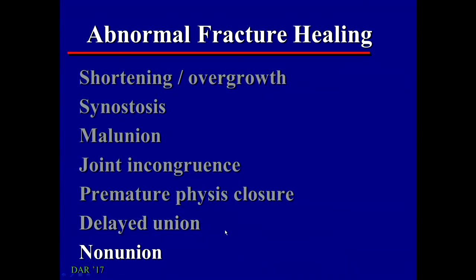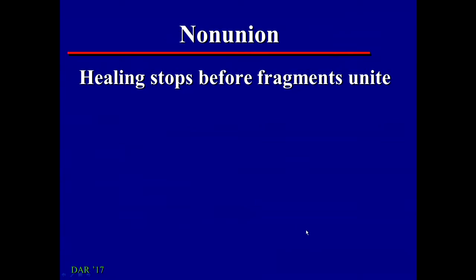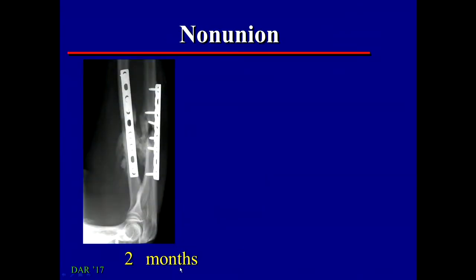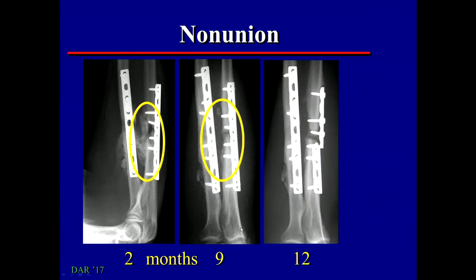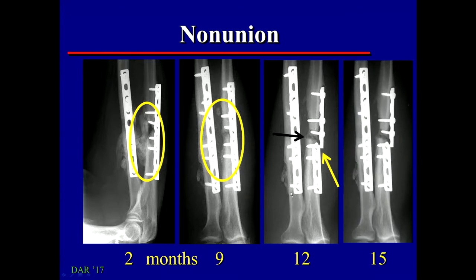Non-union is the granddaddy of abnormal fracture healing — it occurs when healing has stopped before the fractures unite. Here we have a fracture of the radius and ulna at two months, internally fixated, with a lot of callus formation but still a gap. At nine months, still a gap. At 12 months, the fracture gap has actually gotten bigger, and the fixation has itself fractured — which guarantees the bone did not heal. At 15 months there is absolutely no progression from 12 to 15 months, confirming an established non-union.